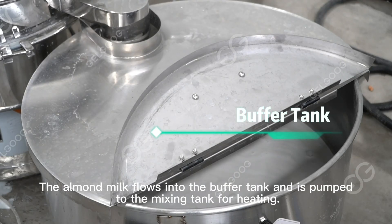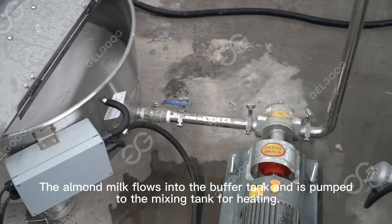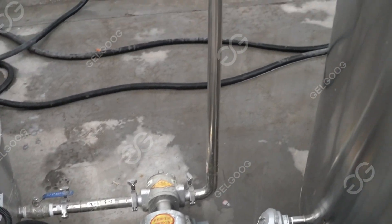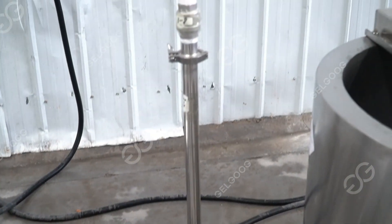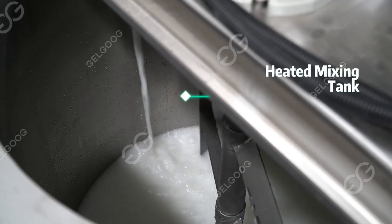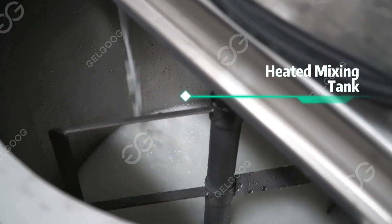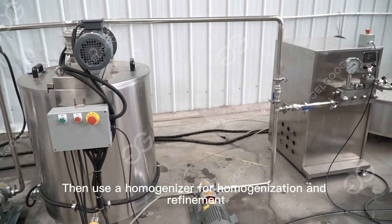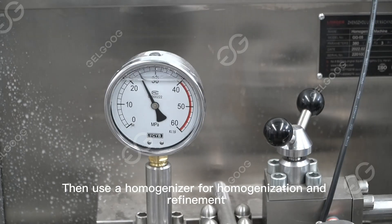The almond milk flows into the buffer tank and is pumped to the mixing tank for heating. Then use a homogenizer for homogenization and refinement.